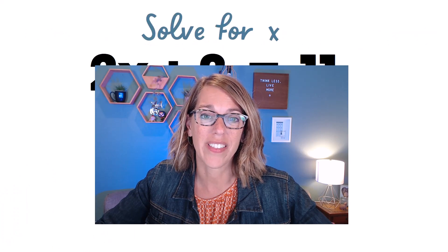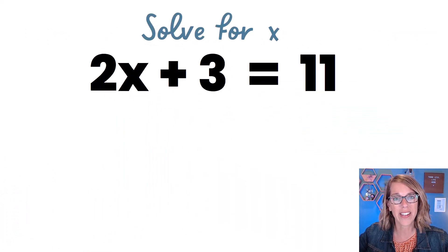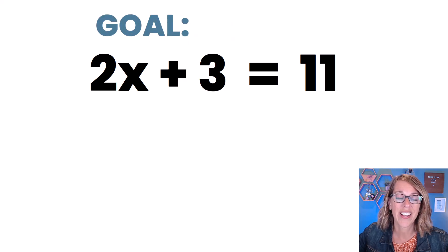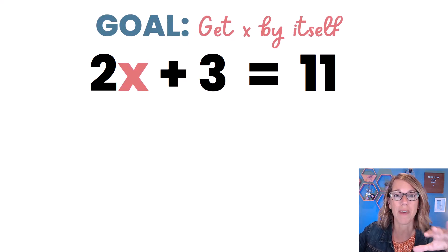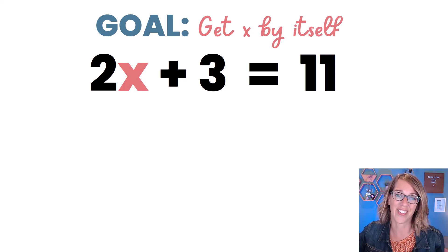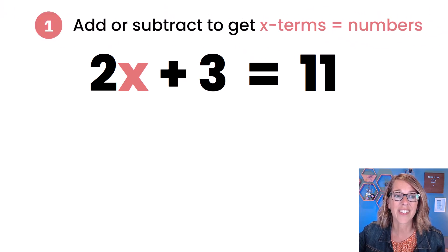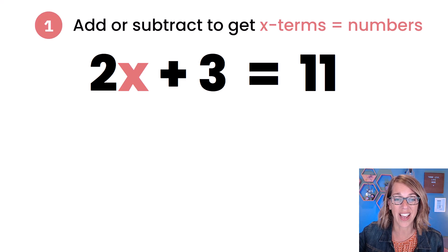Let's go ahead and dive in with this example. We want to solve for x, and we're going to solve for x in two steps. Our goal is to get x all by itself on one side of the equation, everything else on the other side. We're going to start with step number one, and that's to add and subtract to get our x terms on one side and our numbers on the other.